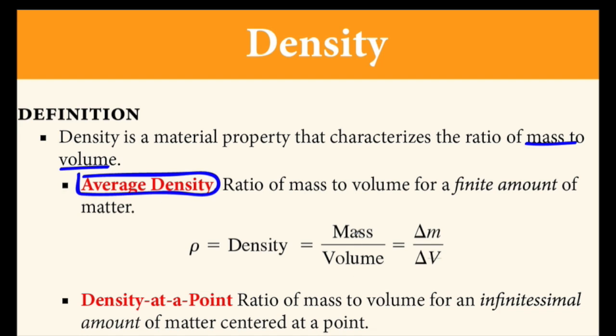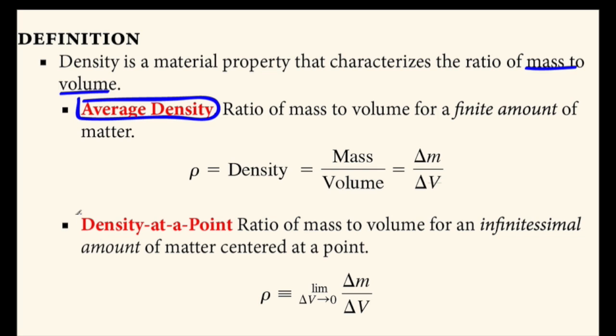which is simply the ratio of the amount of mass to the amount of volume, delta M divided by delta V. Density at a point is defined in a similar way.